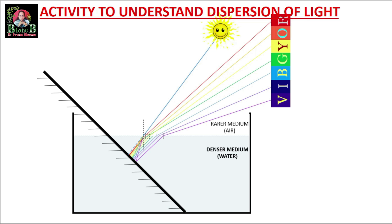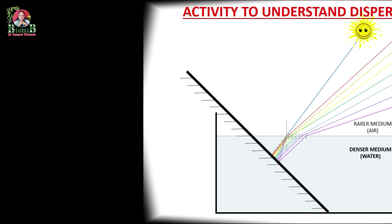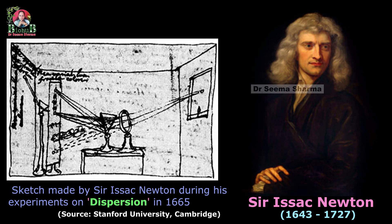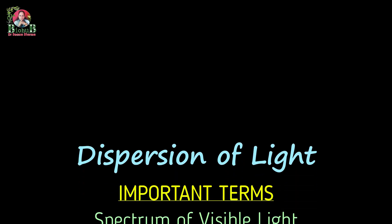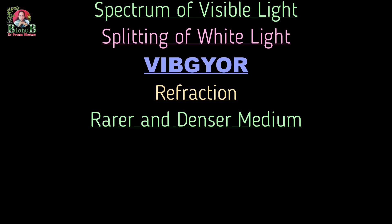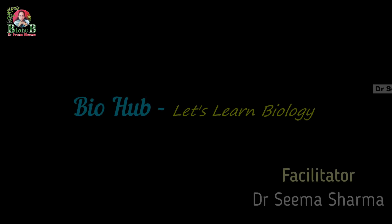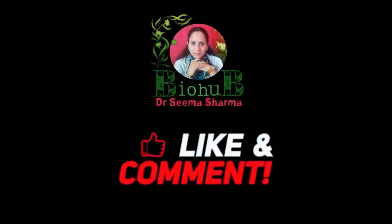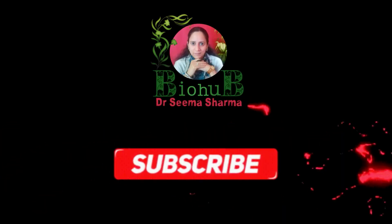This phenomenon of dispersion of light was observed and explained for the first time by Sir Isaac Newton of England in 1665, and he later published this observation in one of the reputed journals in 1672. So dear budding explorers, you also carry out this activity and enjoy the magic of dispersion with your own eyes. Have a great day — I'll see you in the next one!